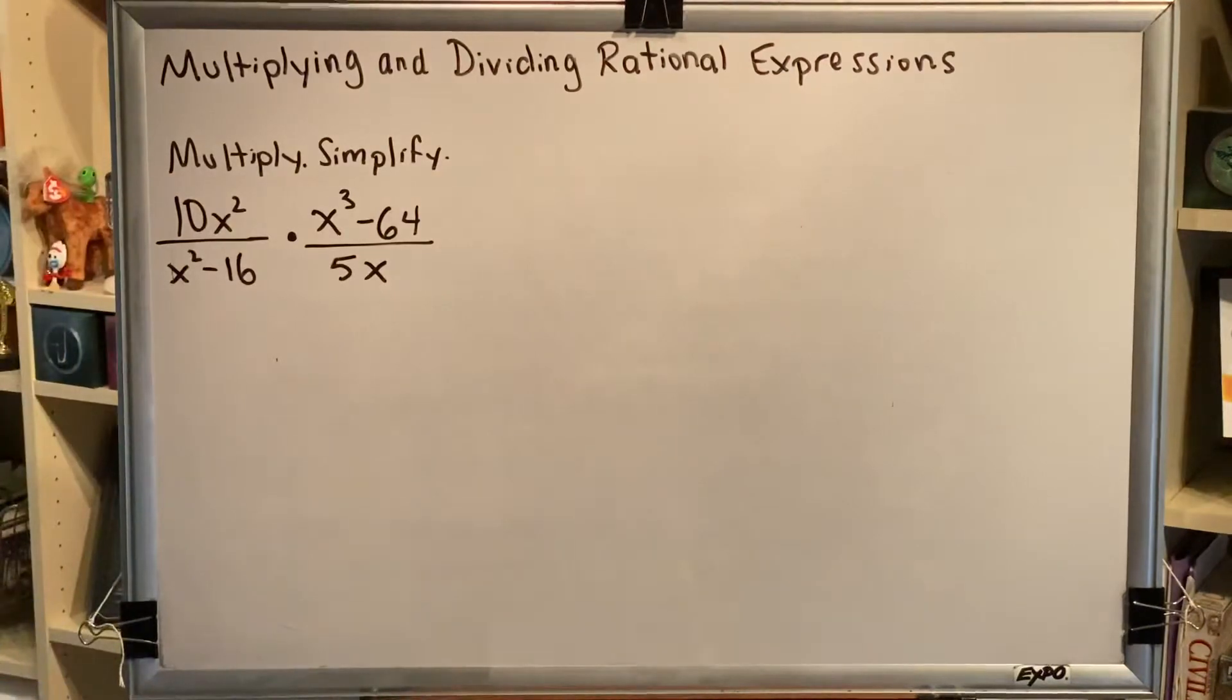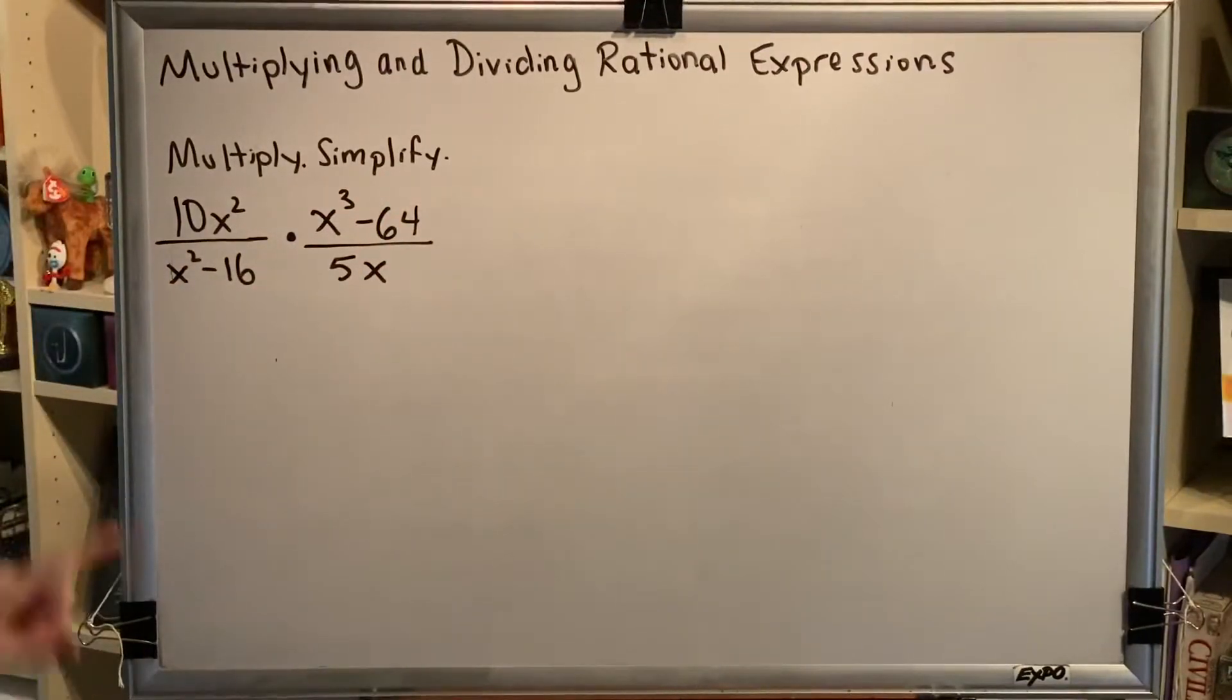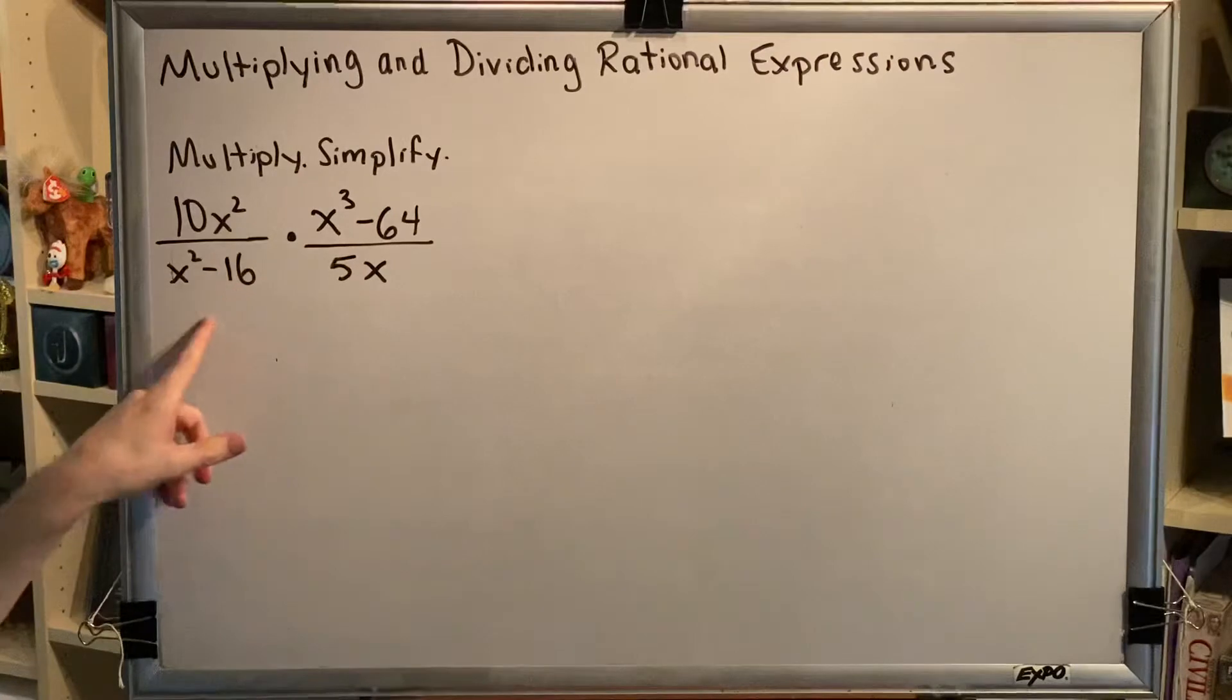We begin by factoring. We have to factor all four of these. Now two of them are monomials, the 10x² and the 5x, so we can leave those alone. But anything with more than one term, we're going to need to factor.